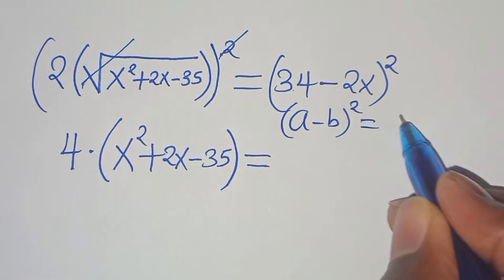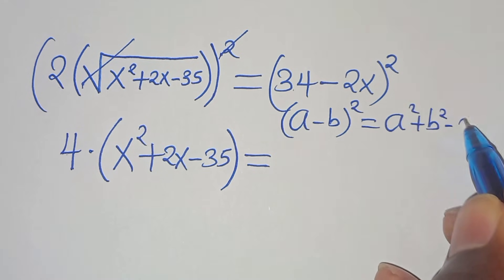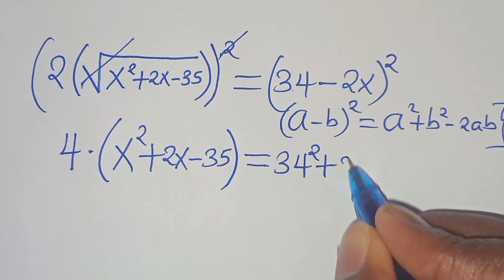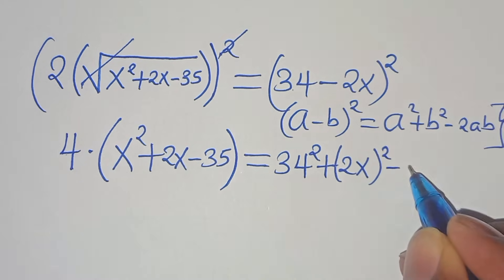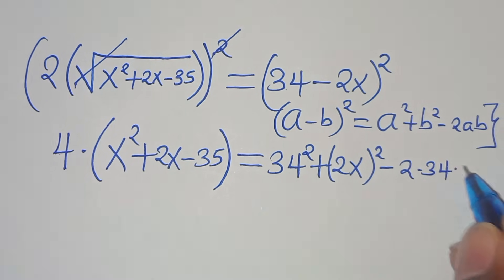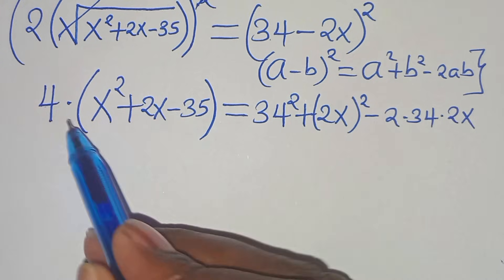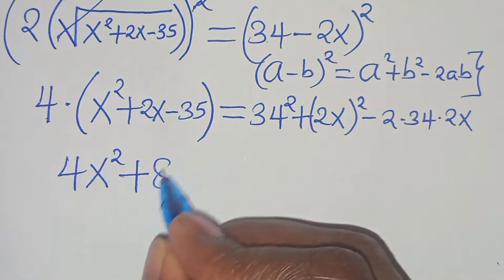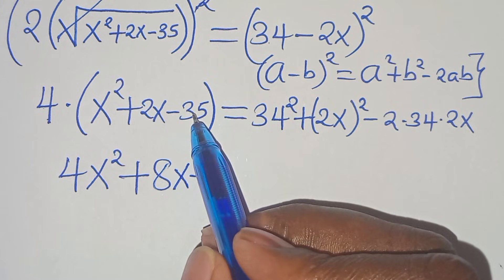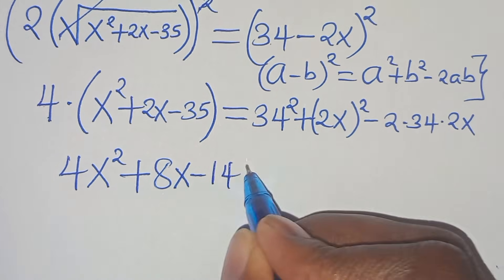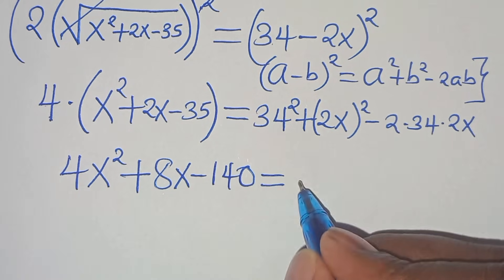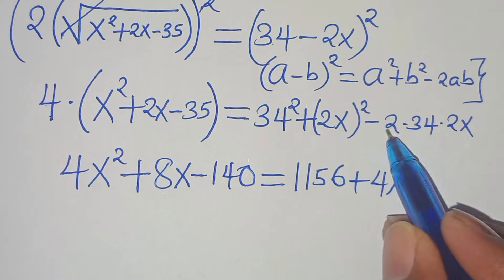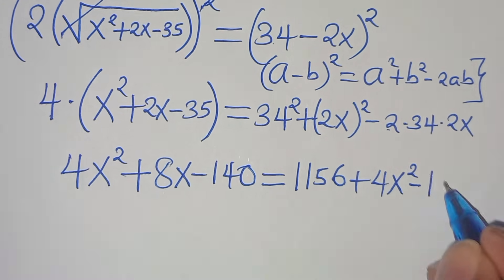Expanding (34 minus 2x) squared using the identity (a minus b) squared equals a squared plus b squared minus 2ab: 34 squared plus (2x) squared minus 2 times 34 times 2x. So the left side opens to 4x squared plus 8x minus 140, and the right side gives 1156 plus 4x squared minus 136x.